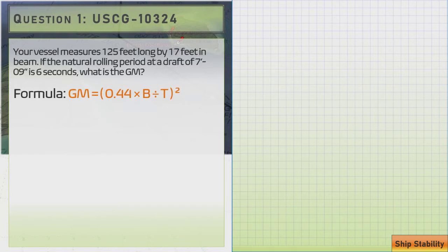So let's plug our formula in. We need the beam and the time in seconds. Right away you can kind of see that there's some red herring material in this question. You don't really need the distance for the length and you don't need the draft depth here. What we do need is the 17 foot in beam measurement.